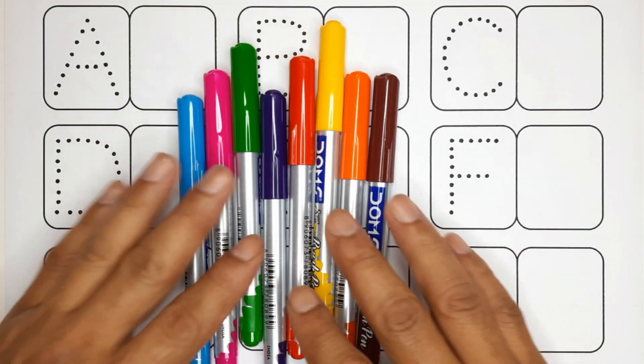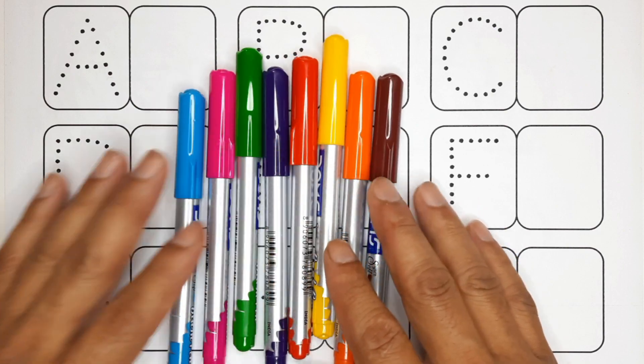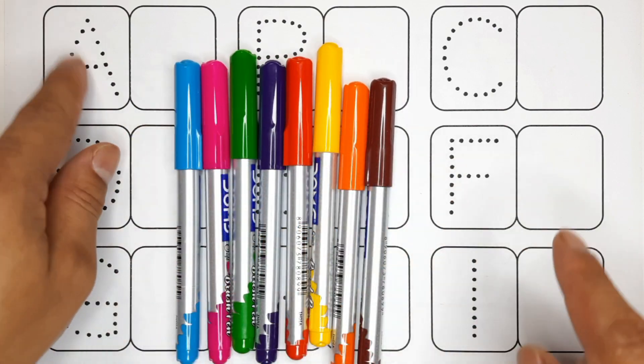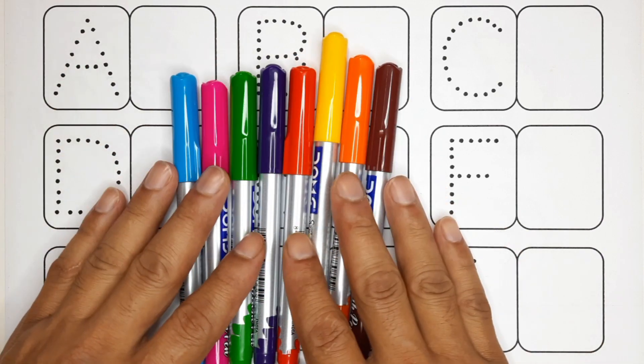Hello kids, welcome to Pinakil Show. Today in this video we are going to learn and write the English alphabet letters from A to I. So let's learn the name of colors.